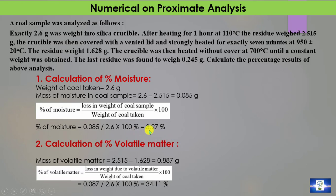For volatile matter: the volatile matter is calculated from the sample after removal of moisture. The residue weighs 2.515 grams. After heating at 950°C ± 20°C, the residue weighs 1.628 grams. So the mass of volatile matter is 2.515 − 1.628 = 0.887 grams. Percentage volatile matter equals loss in weight divided by weight of coal taken, calculated as 34.11%.